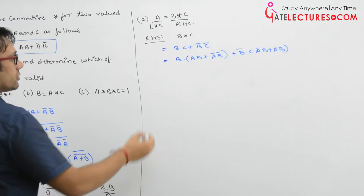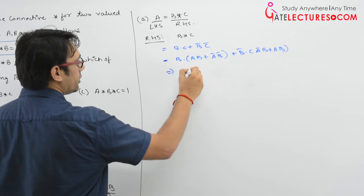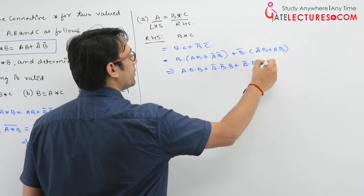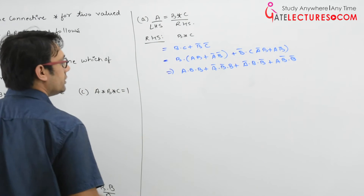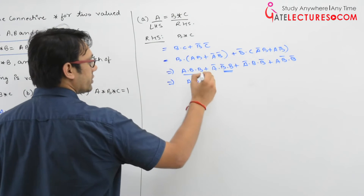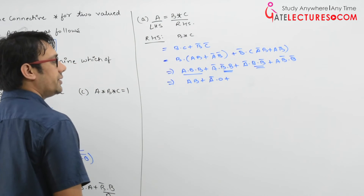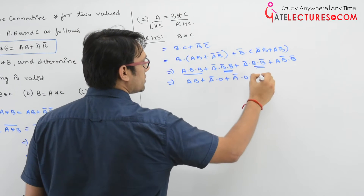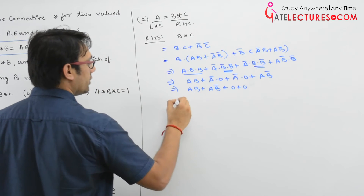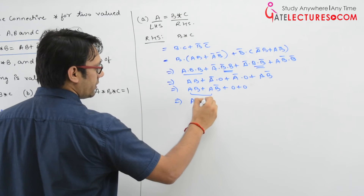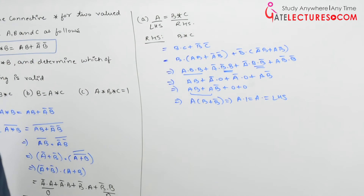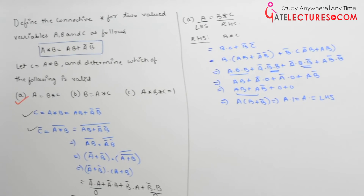Expanding: A·B·B + A'·B'·B + A'·B·B' + A·B'·B'. This simplifies since B'·B = 0 and B·B' = 0, giving AB + 0 + 0 + AB'. Taking A as common: A(B + B') = A·1 = A. This equals the left-hand side, so the first option A = B★C is valid.